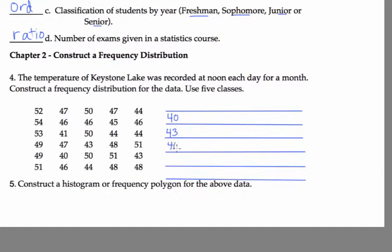So then again, I'll add 3. Then how do I find this? Well, my next class starts at 43, so this one must end at 42. My next class starts at 46, so this one goes to 45. You see here, I can just keep adding 3 as well. This is my class limits.